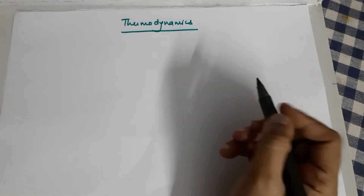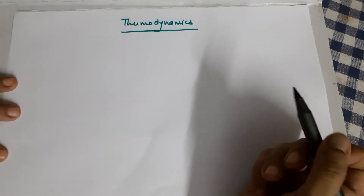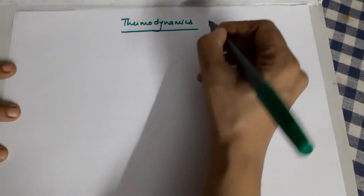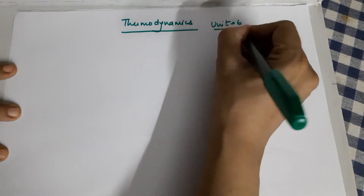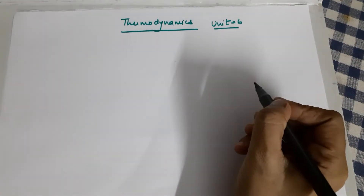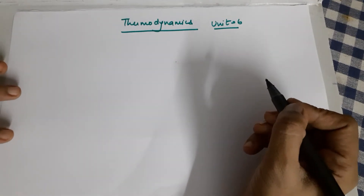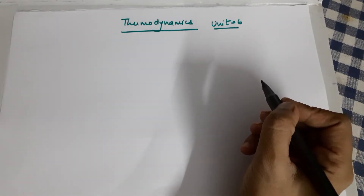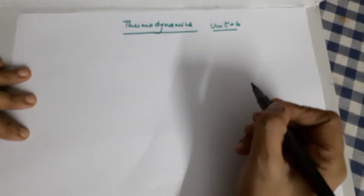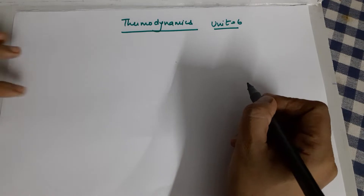Good morning, Class 11. Welcome to my channel by Seema Makhejani. We are going to do the topic called thermodynamics. This is Unit 6 of NCERT, and this chapter is a bridge between chemistry and physics because you do have thermodynamics in physics too. So whatever we require out of thermodynamics in chemistry is what we would be doing in today's class.